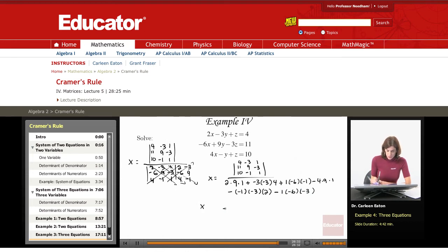So x equals, same determinant. Let's just work with the denominator right now. 2 times 9 times 1 is 18, plus negative 3 times negative 3 is 9, times 4, that's 36. Negative 6 and 1, that's 6. And now subtracting, 4 times 9 times 1, that's 36. Minus negative 1 and negative 3 is 3, times 2 is 6. Minus 1 times negative 6 is negative 6, times negative 3 is 18.